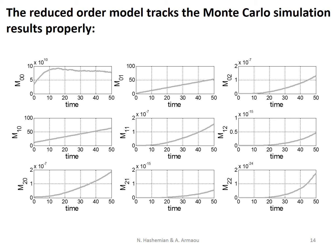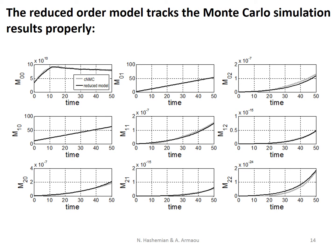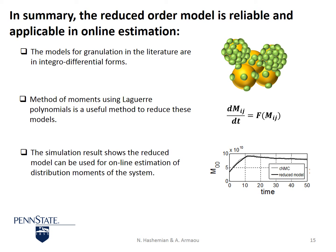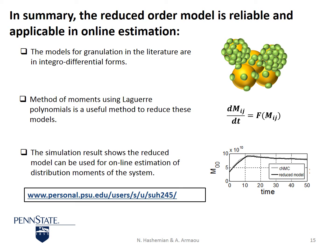These figures show the moments using the constant number Monte Carlo method, and the black lines show the results from the reduced order model. In summary, the models for granulation in the literature are in integral differential forms. The method of moments using Laguerre polynomials is a useful method to reduce these models. The simulation results show the reduced model can be used for online estimation of system moments. For more information, please read our papers listed at my webpage.